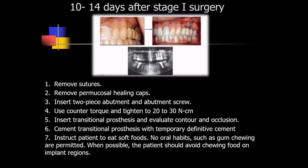Remove the impression pin and abutment, place the wide emergence permucosal healing cap, and suture. The second stage, 10 to 14 days after stage 1 surgery: remove sutures and permucosal healing caps, insert the two-piece abutment and abutment screw, counter-torque and tighten to 10 to 13 Newton centimeters, then insert the transitional prosthesis and evaluate contours and occlusion. The transitional prosthesis should have a narrow occlusal table and be 1 to 3 mm completely out of occlusion in all excursions and in centric. Cement with temporary definitive cement and instruct the patient to eat soft food; no oral habits such as gum chewing are permitted.